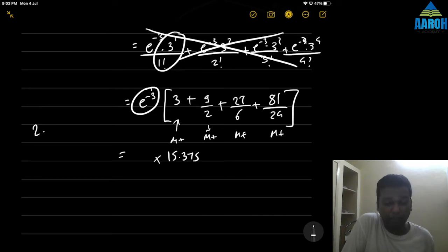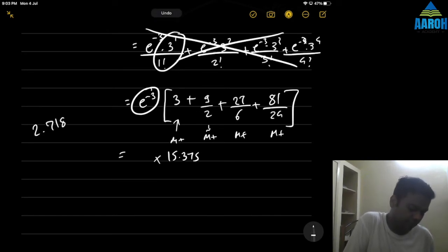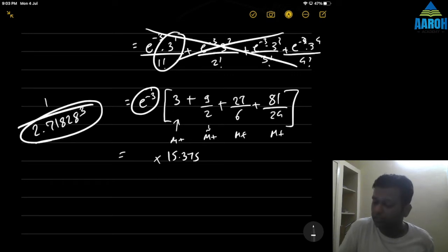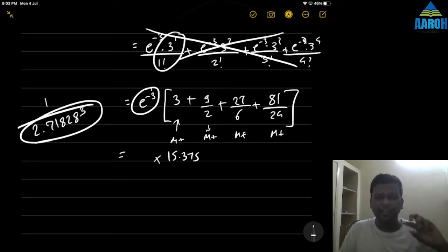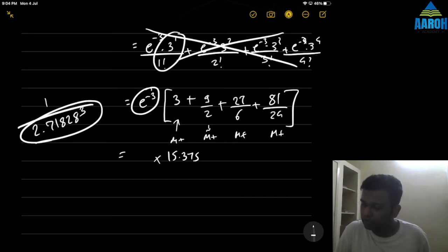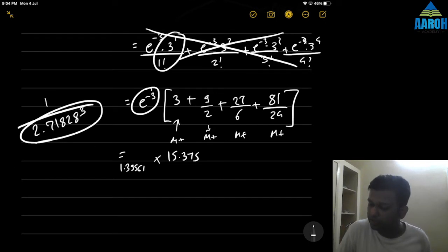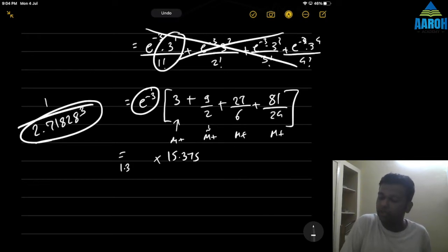If e^(-m) is not given, we approximate e as 2.71828, so e^(-3) = 1 / (2.71828^3). On the calculator: enter 2.71828, press ×, then = twice to get 2.71828^3, then take the reciprocal by dividing. That gives us 0.04978.